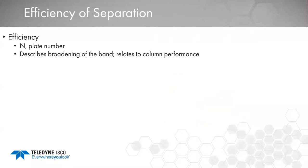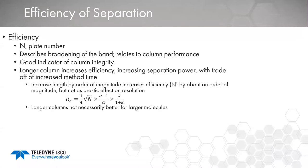The last component is the efficiency of the separation, driven by the plate count N of your column. This describes the broadening of the band as it elutes down the column and relates to your column performance. It's a really good indicator of column integrity. If your column is robust and performing well run after run with the same plate number, your chromatography performance isn't changing. If the plate count starts to decrease, that's usually indicative of some type of damage or degrading chromatography performance.